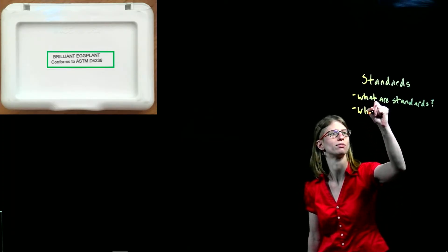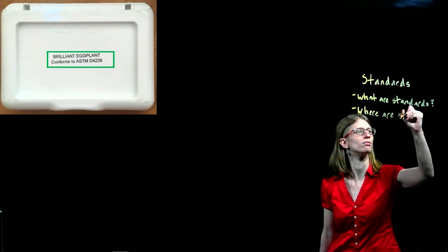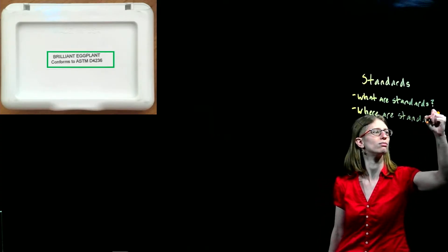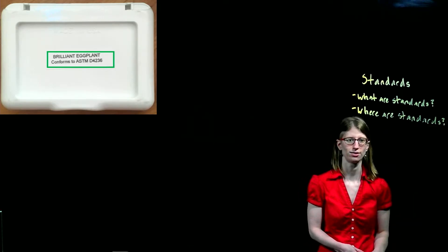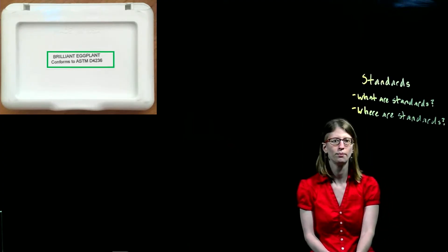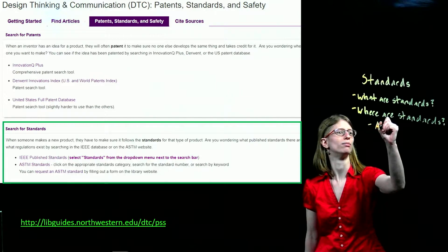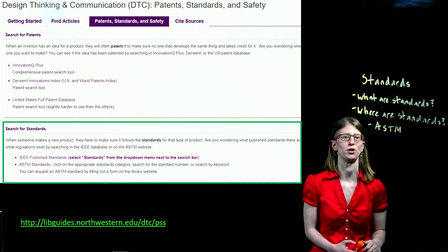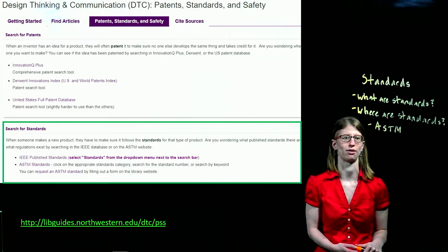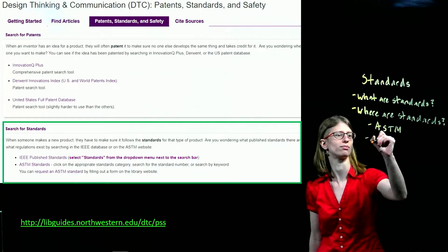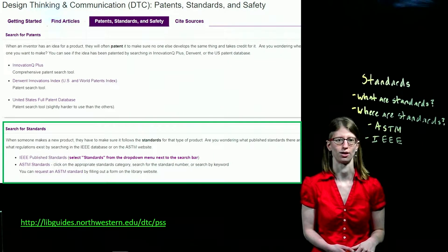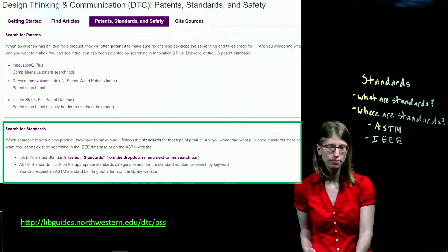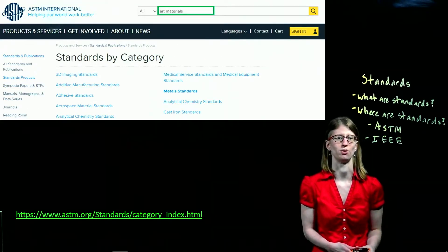Next, where are standards? I can search for standards using the resources on the Patents, Standards, and Safety tab of the Design Thinking and Communication Research Guide. In addition to ASTM, which produced the stamp pad standard, IEEE is another company that produces standards. To find the stamp pad standard, I can click on the ASTM Standards link.